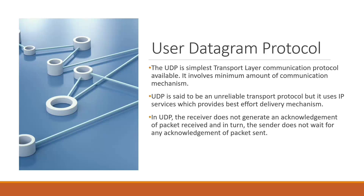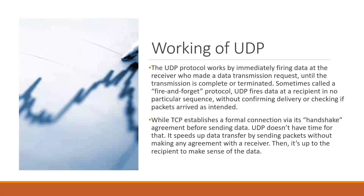UDP works by immediately firing data at the receiver who made the data transmission request, until the transmission is complete. Sometimes called a fire-and-forget protocol, UDP fires data at a recipient in no particular sequence without confirming delivery or checking if packets arrived as intended. While TCP establishes a formal connection via its handshake agreement before sending data, UDP speeds up data transfer by sending packets without making any agreement with the receiver — it is then up to the recipient to make sense of the data.